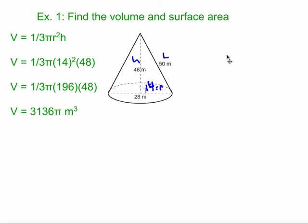So now let's do the surface area of this cone. Surface area is pi times r squared plus pi times r times l, which is the slant height. r is the same, it's 14, and my slant height is 50.